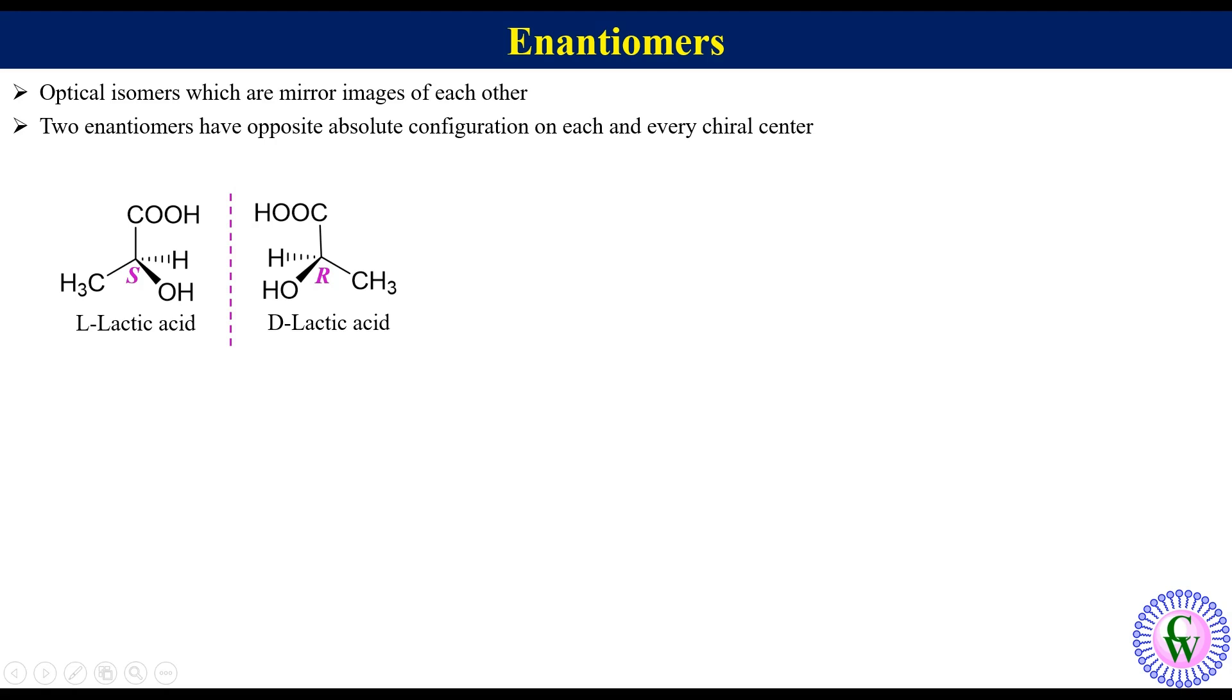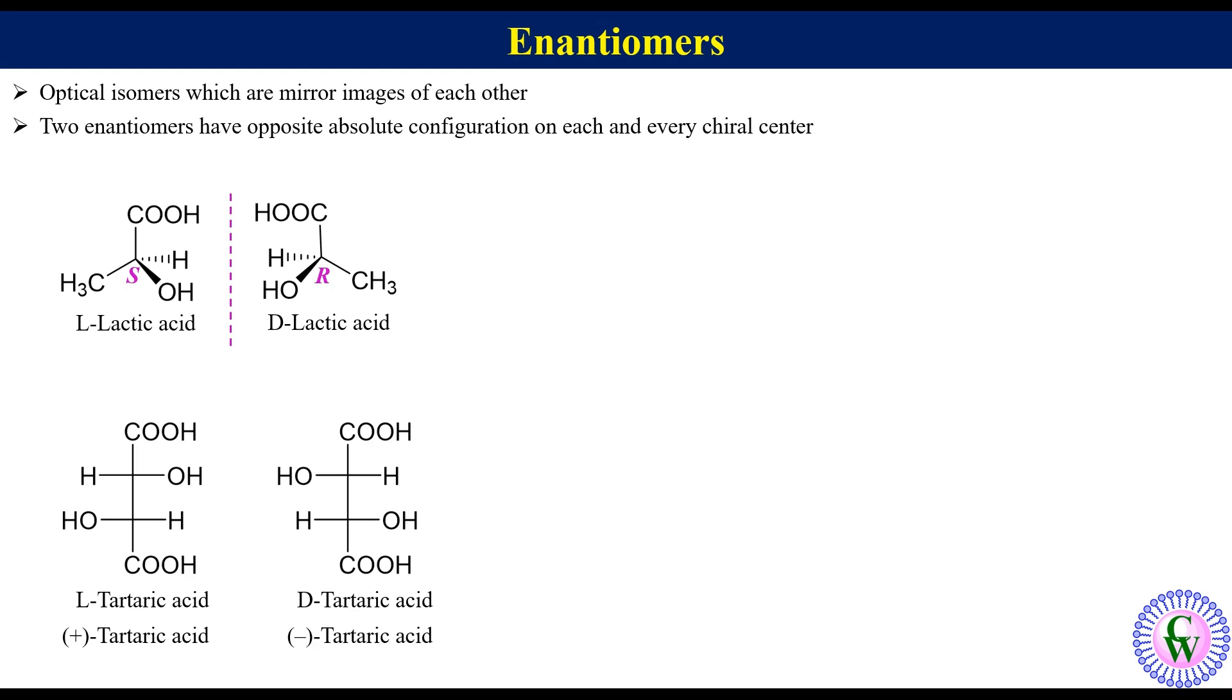Next example, L-tartaric acid and D-tartaric acid. These two have two chiral centers. L-tartaric acid rotates the plane of polarized light towards the right, so it is called plus tartaric acid, while D-tartaric acid rotates the plane of polarized light towards the left, so it is also called minus tartaric acid. We can see here that these are mirror images of each other, so enantiomers.